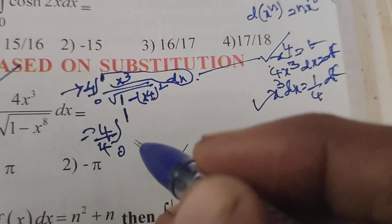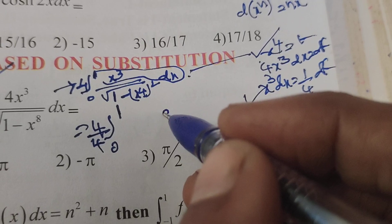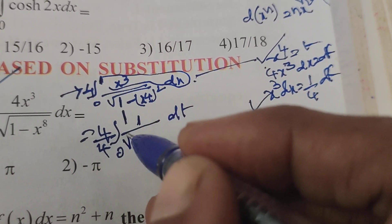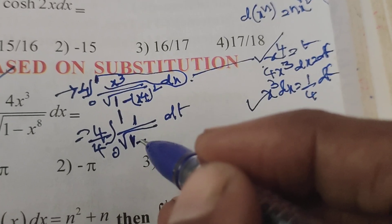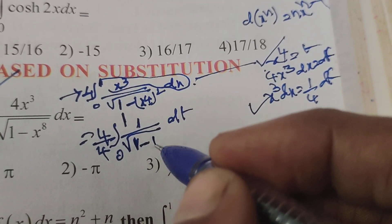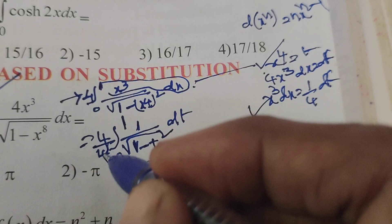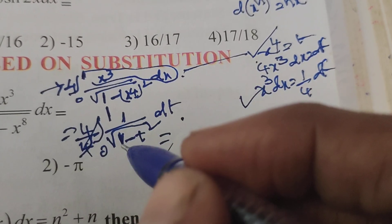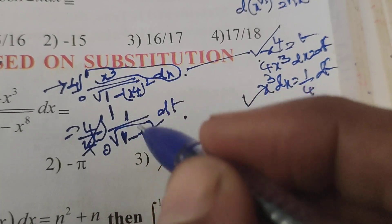So here I write 4/4, x³ dx means dt, 1 by root of 1 minus, what is x⁴? t. So t². 4/4 gets cancelled, that equals to integral of 1 by root of 1 minus t².